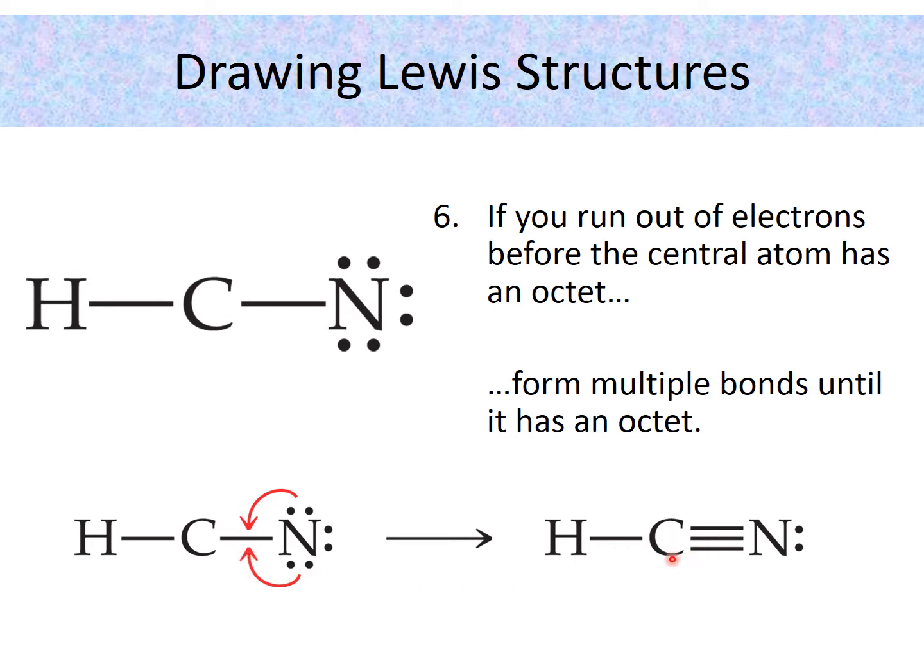Now this gives carbon eight electrons. Let's count them: two here, two here, two here, and two here. That's a total of eight. But what about nitrogen? It was sharing electrons. Did that affect its octet? Well, let's see.